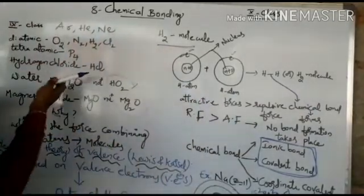A chemical bond is of 3 types: ionic bond, covalent bond, and coordinate covalent bond. In 10th class you will study only 2 bonds — ionic bond and covalent bond. These 2 bonds are explained under the Electronic Theory of Valence, which was proposed by Lewis and Kossel.